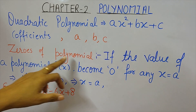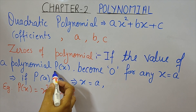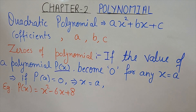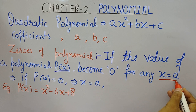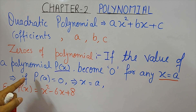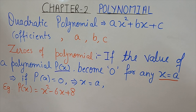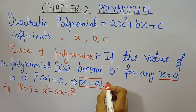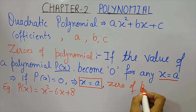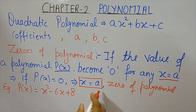In this chapter we will mainly deal with the zeros of the polynomial. If the value of polynomial p(x) becomes 0 for any value x = k, then that value of x is said to be a zero of the polynomial. So if p(a) = 0, then x = a is a zero of the polynomial.